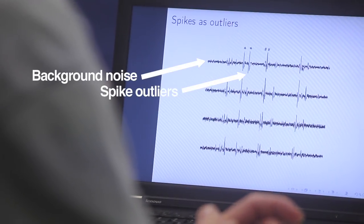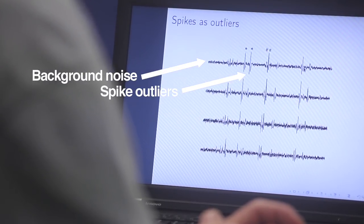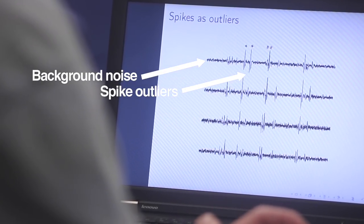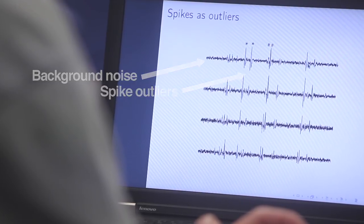To continue this analogy, think of the brain activity as the sum of the conversation of this wedding room. The raw data we would get from the microphone when we record from the brain looks like this. You can see that most of the time nothing happens. We only see background noise. From time to time, a spike shows up.